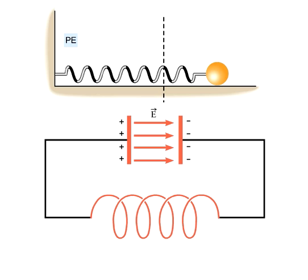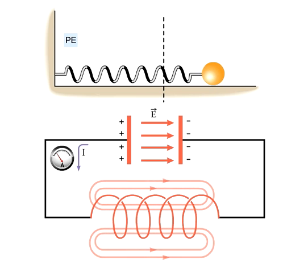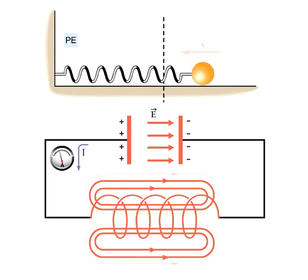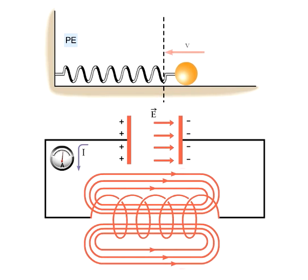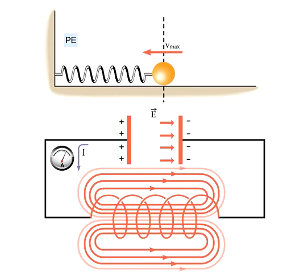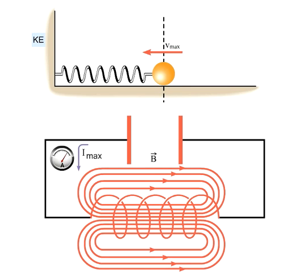In the LC circuit, we will start with a fully charged capacitor. This will be analogous to the stretched spring that we talked about earlier. All of the energy of this system is stored in the electric field in between the plates of the capacitor, analogous to starting with a fully stretched spring. The capacitor begins to discharge, giving rise to an increasing counterclockwise current in the circuit. This changing current produces a magnetic field in the inductor. The energy in the system is being converted from the electric field of the capacitor to the magnetic field of the inductor. When the capacitor is fully discharged, we have the maximum current in the circuit and thus the maximum magnetic field in the inductor. This is analogous to all of the energy in the spring-ball system being kinetic energy.